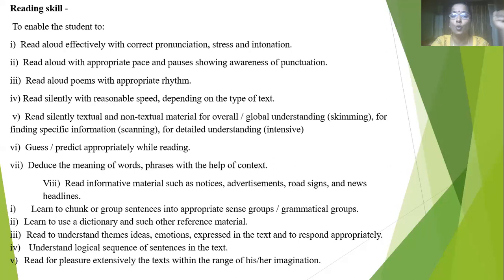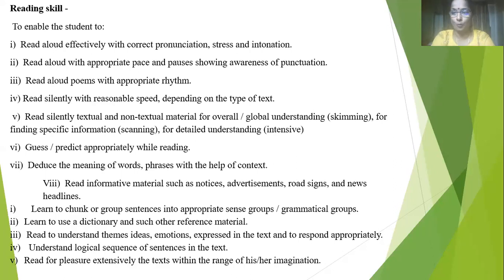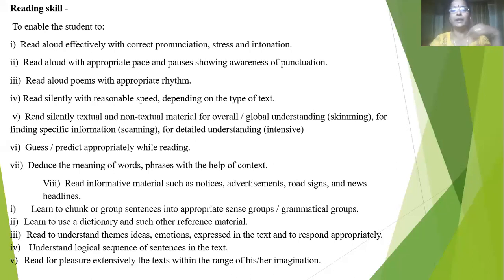For English as a first language, chorus or row reading is not used — instead, loud reading and silent reading are emphasized. Reading aloud involves correct pronunciation, stress, intonation, forces, rhyme, and rhythm. Students should also be helped to read silently with reasonable speed depending on the type of text. Silent reading is used for prose comprehension, and silent recitation for poetry — helping students understand central ideas, rhyming scheme, new words, idioms, and phrases.